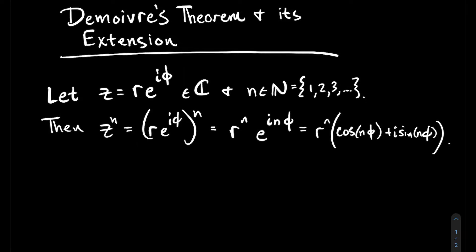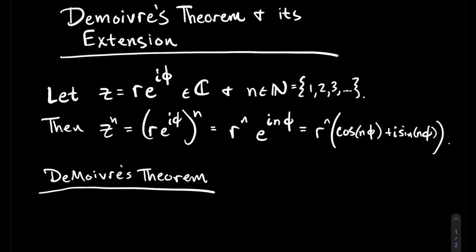Remember, e to the i n phi is cosine of n phi plus i sine of n phi. So I'm thinking about n phi as like the argument of this complex number now. So that's what happens with that n. How do we raise z to a nice nth power where n is some natural number? All we need to do is raise the absolute value to that power and then multiply the argument by that power.